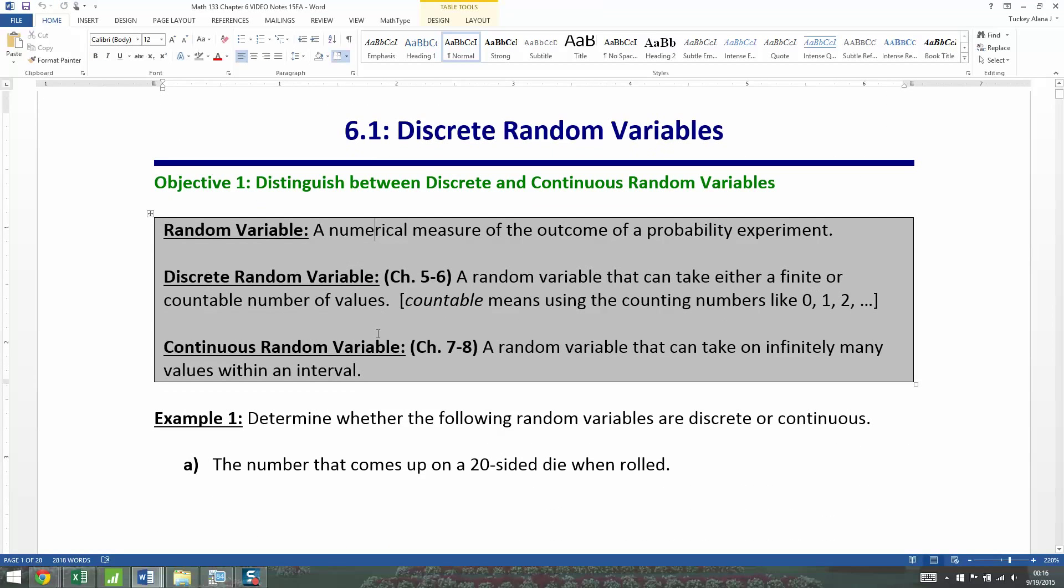Now, a discrete random variable is a random variable that can take either a finite or countable number of values, like 0, 1, 2, 3, and so on. Whereas a continuous random variable is a random variable that can take on infinitely many values within an interval. It's tied to whether or not what you're trying to measure is a discrete thing, something you count, or if it's a continuous thing, something you measure, like inches or feet or temperature. It's on a scale that has infinitely many decimal places if you could just measure it more finely with a better tool.